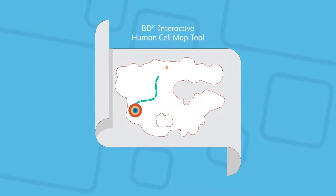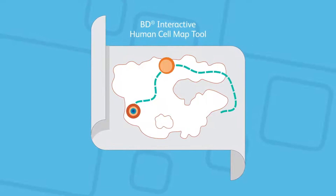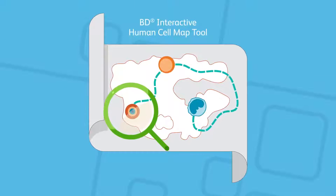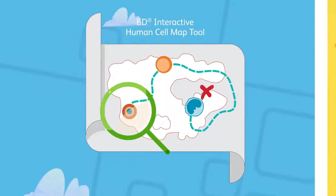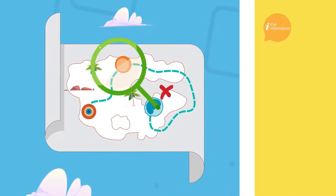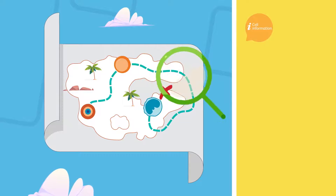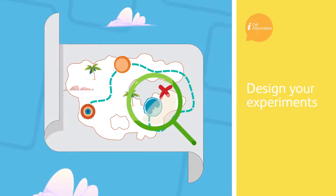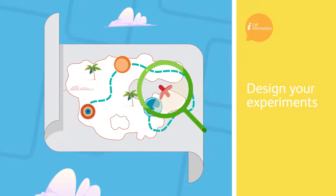Introducing the BD Interactive Human Cell Map Tool, an intuitive digital roadmap toward discovery developed to deliver the important cell information you need to design your experiments.